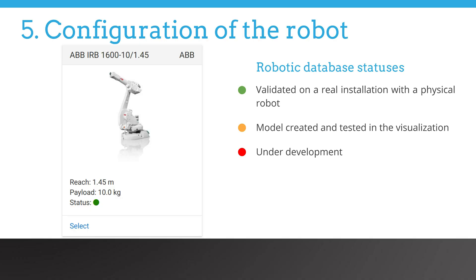Next, the user will be asked to select the model of the robot. The model needs to be an exact match of the physical system. A model consists of the kinematic model represented by the lengths of the links and ranges of the joints — this information is required for path planning. Another part of the model consists of CAD models of each link, which are used for collision avoidance and also for visualization.